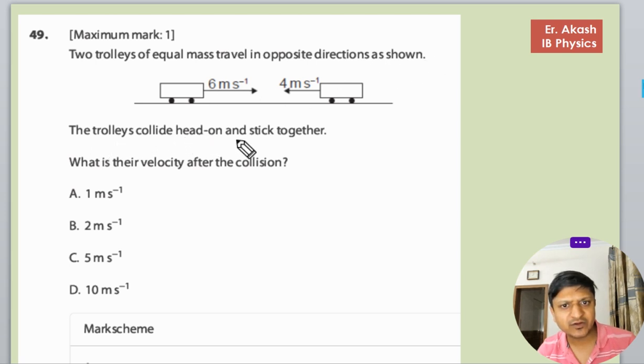The trolleys collide head-on and stick together. What is their velocity after the collision?